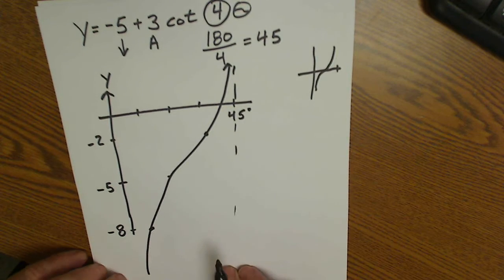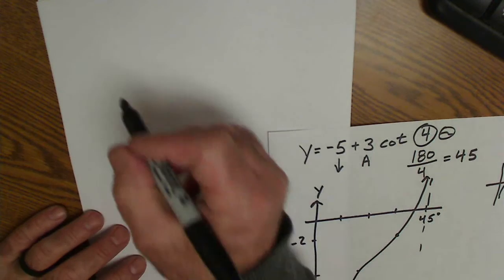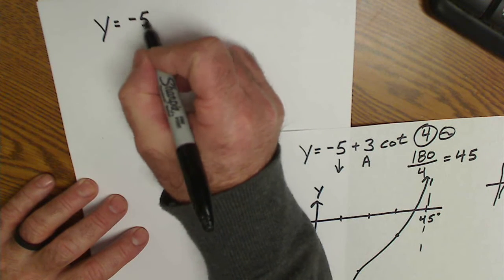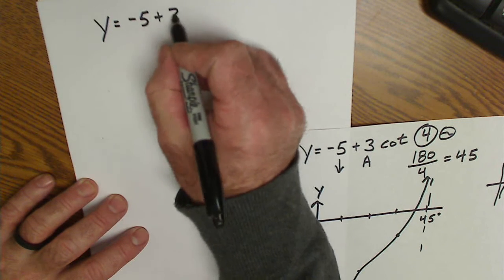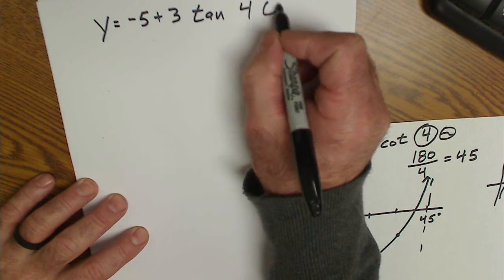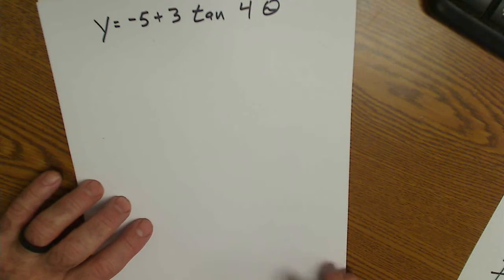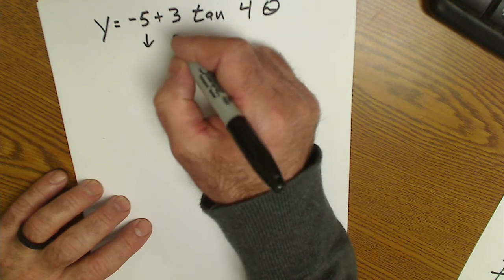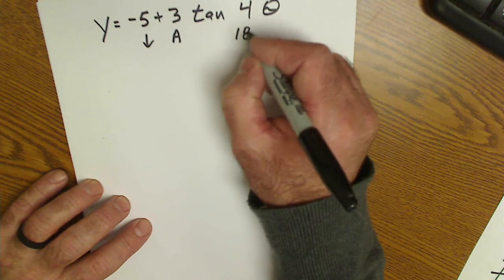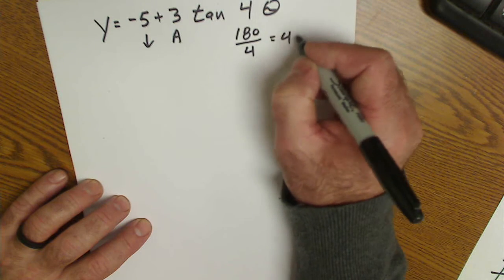If you do the same graph but change it to a tangent — let's say I have y equals negative 5 plus 3 tangent of 4 theta. Again, a five-step process. Mark up the equation. Amplitude, period again is 180 divided by 4, which is 45.